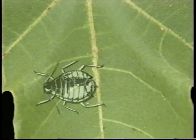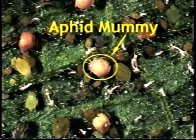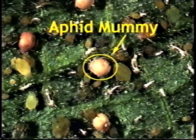The swollen aphid is called a mummy. Soon, the adult wasp cuts a hole in the mummy and emerges to repeat the cycle. The mini wasps, like most parasites, are hard to see, but the presence of mummies in aphid colonies alerts the grower that parasites are patrolling the area.